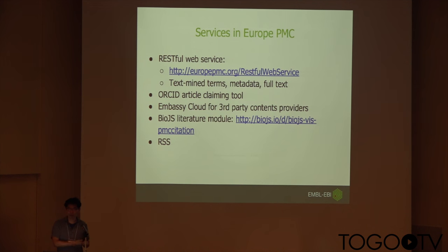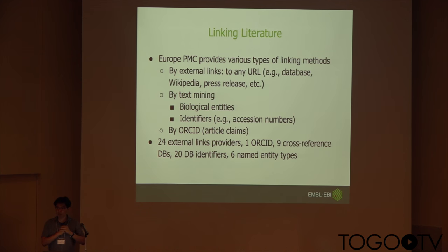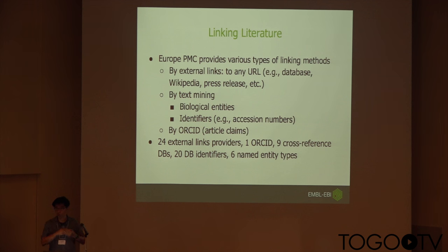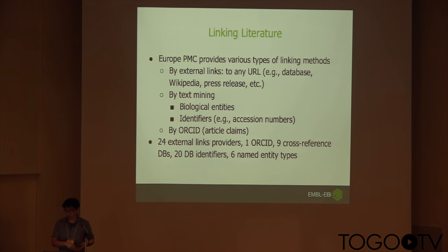Bruno just mentioned BioJS, so we also have a BioJS module for literature — you can use it with an RSS feed for your query. Besides providing the same content as PMC, we do a lot of linking literature with other resources, and we have three mechanisms. If you have your own resource with a URL for each entry, you can use so-called external links, where you provide all those mappings and we upload them so they appear on Europe PMC. We also do text mining — we mine bioentities and identifiers, which are basically accession numbers. This is an automatic way of linking literature with other resources. And finally, we have an ORCID claiming tool to link your publications or data you published.